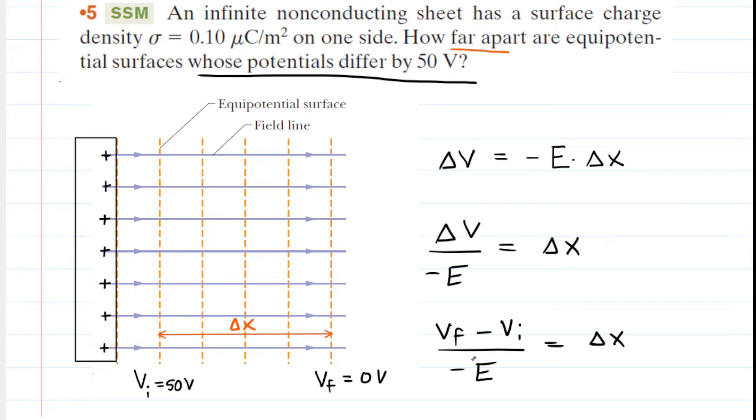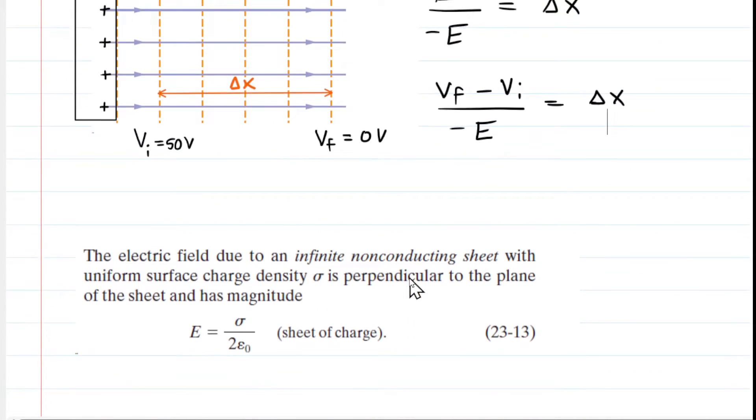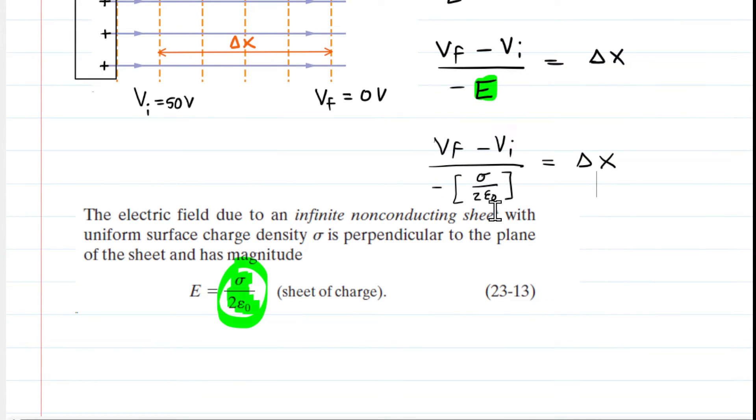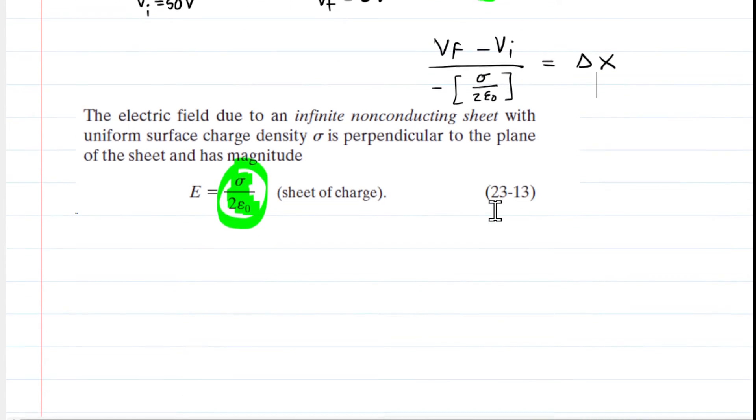You probably learned in a previous chapter when you studied Gauss's law that an infinite non-conducting sheet will produce an electric field of magnitude given by this expression here: E equals sigma over 2 epsilon naught. This could be proved rather easily using Gauss's law, which you probably did in chapter 23. So we're going to take this expression for the electric field produced by an infinite non-conducting sheet and we're going to fill it in for this E right here.